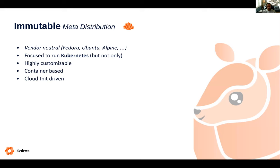Kairos converts your preferred distro to an immutable OS. It all starts with an upstream image, and you can think of Kairos as a framework that brings immutable lifecycle and A/B upgrades to your preferred OS. It's mainly focused on Kubernetes, but we have users running other workloads on Kairos. We produce two kinds of artifacts: one with Kubernetes and one without. It's highly customizable, container-based, doesn't need a container runtime to run, and is cloud-init driven — all configuration to install and upgrade comes as a single cloud config file.